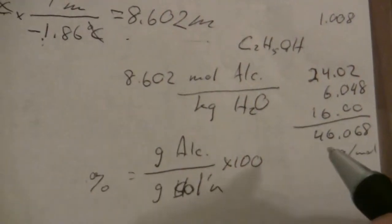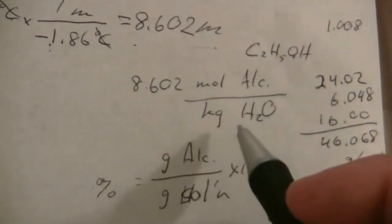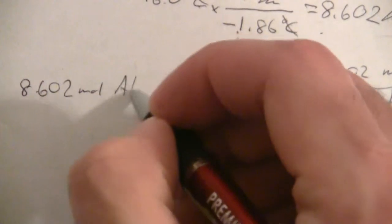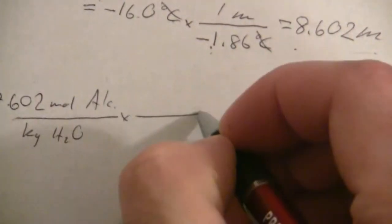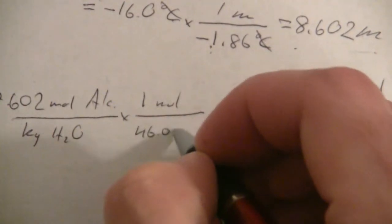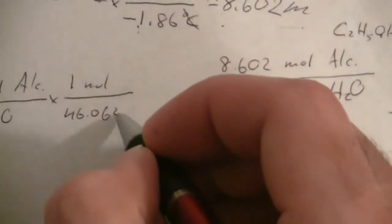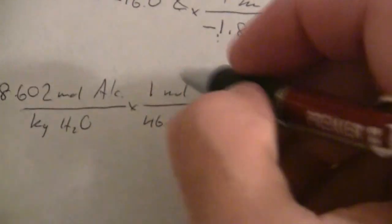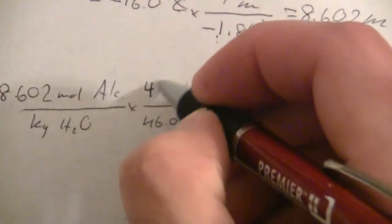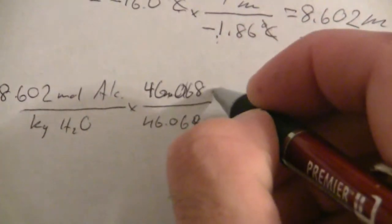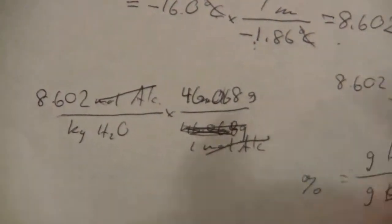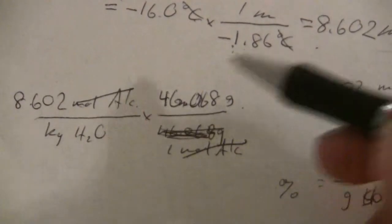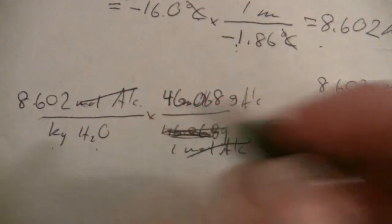And so I'm going to use this to convert those moles to grams. So let me move this over a bit. Moles of the alcohol per kilogram of water, and now I know that in one mole I have 46.068 grams. And I put this backwards again here. Alright, 46.068 grams to one mole. So now my moles of the alcohol will cancel, and I'll have grams. That's grams of the alcohol per kilogram of water.